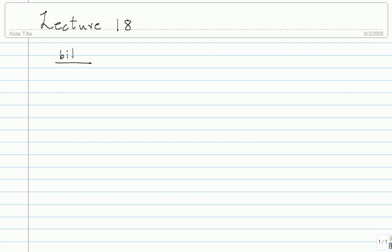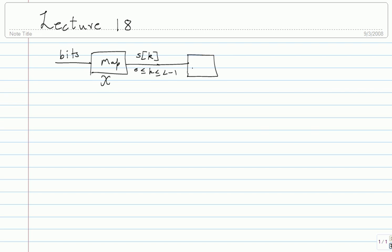Let me remind you how it works. Some bits are converted using a mapper through some constellation to a symbol sequence s_k, for k between 0 and l minus 1 — l symbol sequences drawn from the alphabet. Then it's put through a transmit filter g(t), which goes through the channel c(t), and then noise gets added.